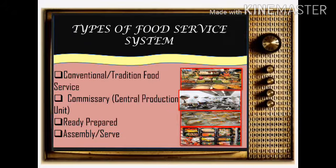Moving on to the next topic, food service systems have different types. First is conventional or traditional food service. Second is commissary or central production unit. Third is ready prepared. And lastly, the assembly or serve.